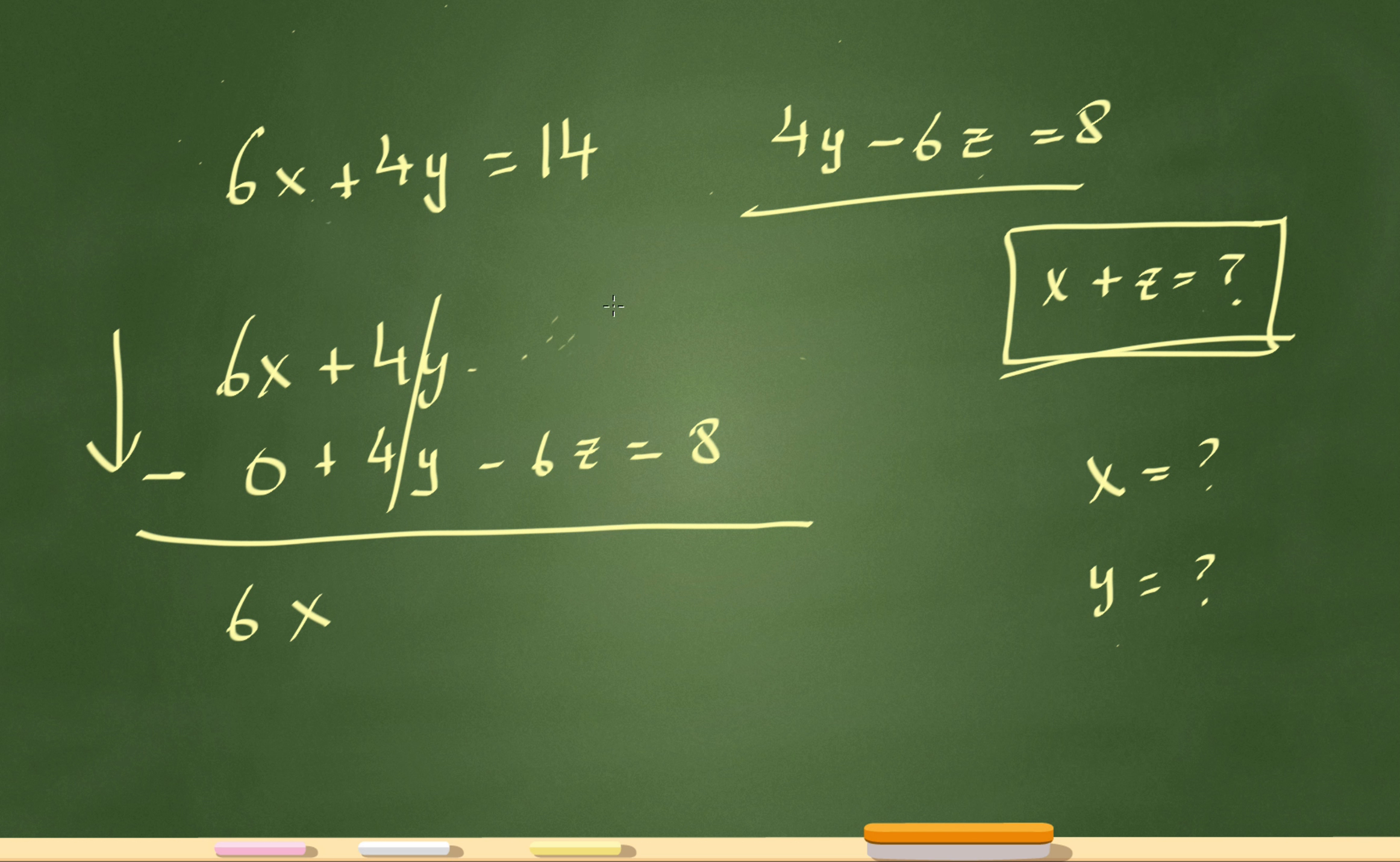So there's a zero up here too. Now zero minus negative 6z is plus 6z and 14 minus 8 is 6.